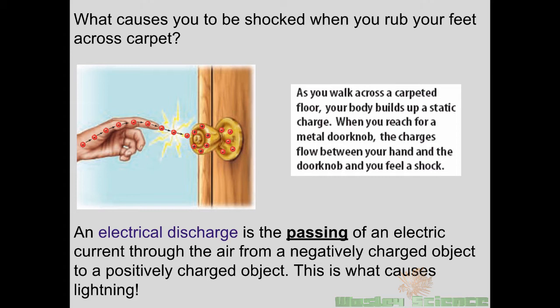Now that you have extra electrons on your shoe, let's say you walk across the room and approach a doorknob — you feel a big zap. The electrons that were on your shoe traveled up your body to your fingertip and took a jump off to the doorknob — that's called an electrical discharge. That really is what lightning is. The electrons are attracted to the metal doorknob because it's very conductive. Your body is conductive but not nearly as conductive as the doorknob, so that's why they make the jump. We'll talk more about lightning at the end of this video.